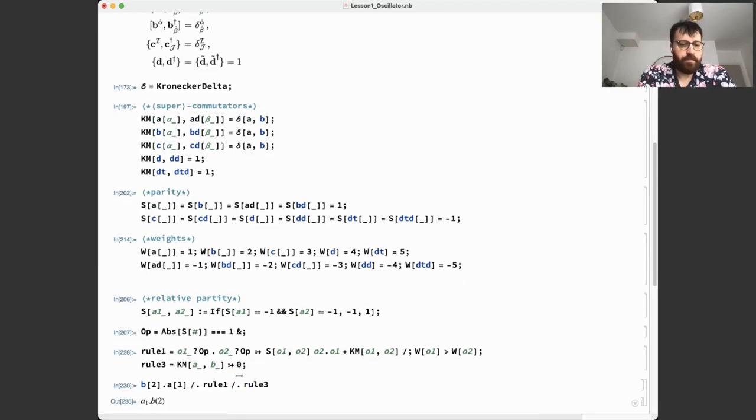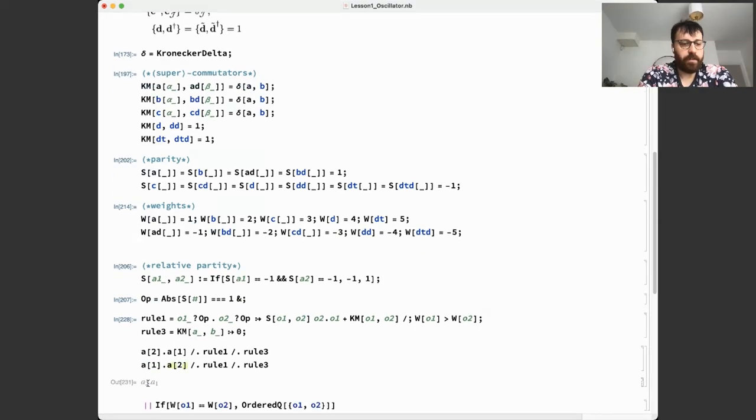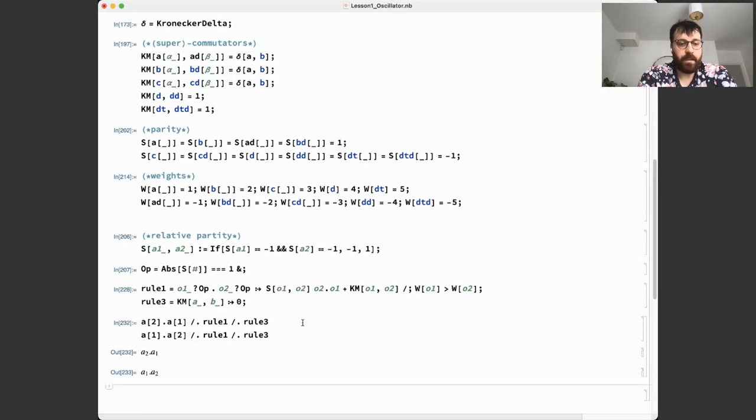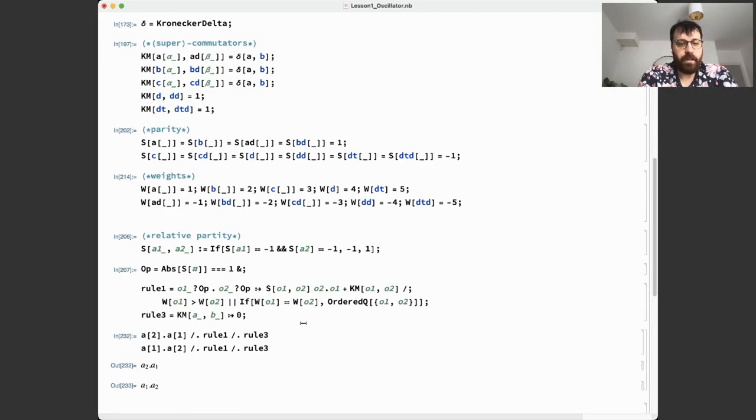I need to define W as weight which would return something for A with any index. I added underscore for ABC and the daggers as well. Let's give it a try. Rule one, you see it doesn't interchange A and B. It also produces this undefined commutator between B and A1, but this is something we'll have to deal with.